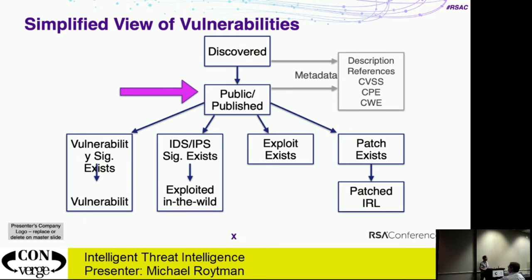First, somebody like Qualys or Rapid7 or Tenable can write a scanner signature for it, meaning when you run a scan you can detect the presence of that vulnerability on a box. Then, an IDS or IPS vendor can write a signature to detect exploitation of that vulnerability — if we see it exploited in the wild, we know an event occurred related to that CVE. Third, somebody can publish an exploit for it in Metasploit, ExploitDB, or a black hat exploit kit — this is why we have threat intelligence. And fourth, somebody can release a patch, which means a mitigation exists, and that patch can or can't be deployed.